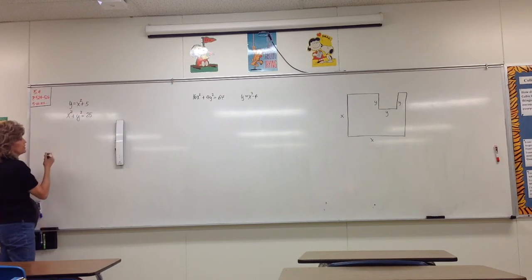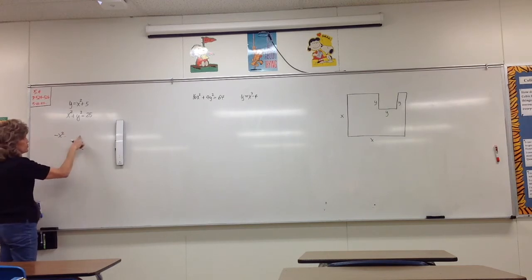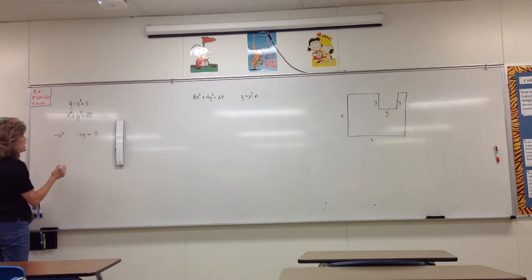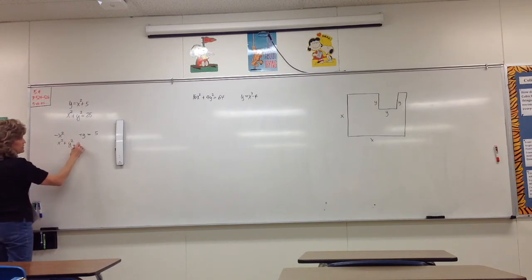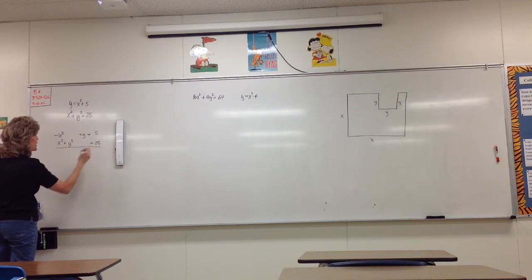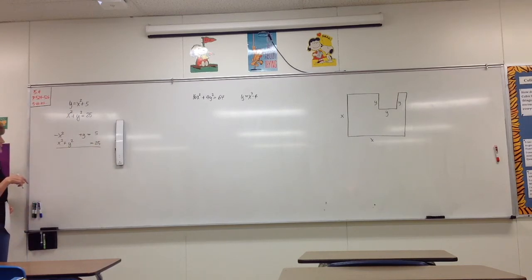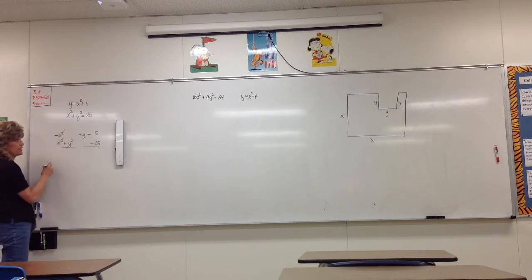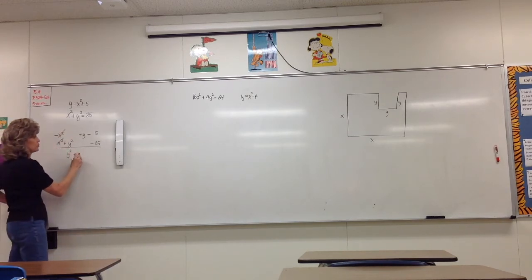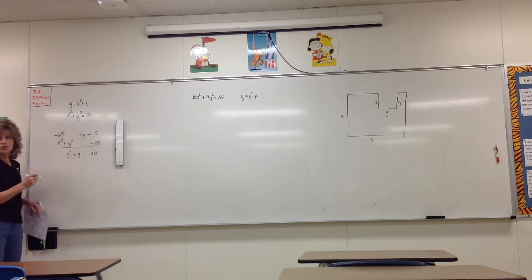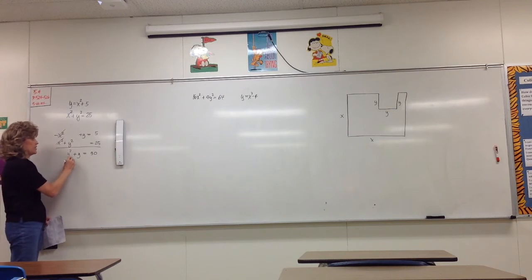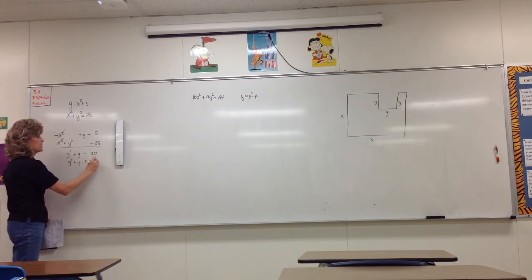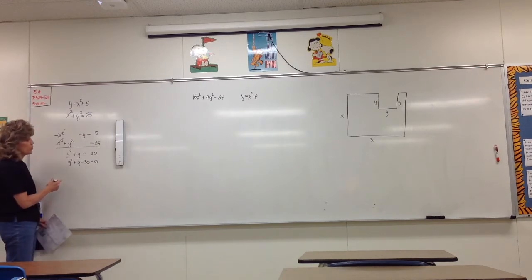I need the x squared on the other side. So the top equation becomes negative x squared plus y equals 5. The bottom equation is x squared plus y squared equals 25. When we add, x squared terms eliminate. We're left with y squared plus y equals 30, which is a quadratic equation. Make it equal zero: y squared plus y minus 30 equals zero.